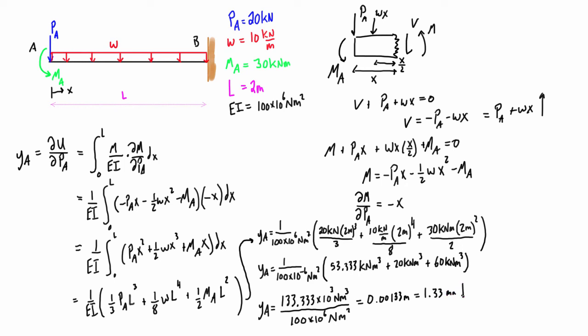So this value is positive because it is going in the direction of the applied load that we used in Castigliano's theorem. So that's good to know. But otherwise, we did find the answer.